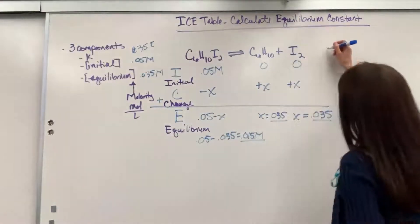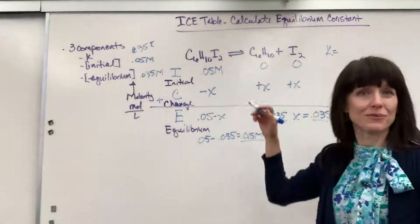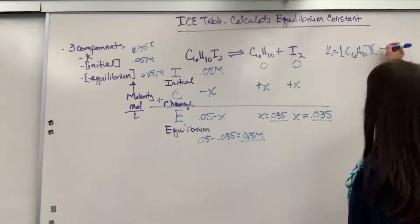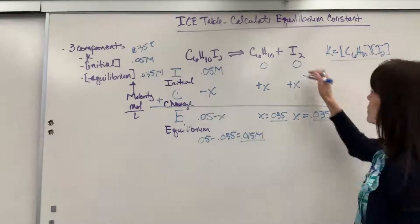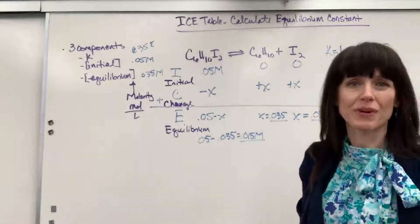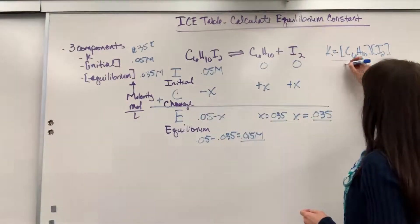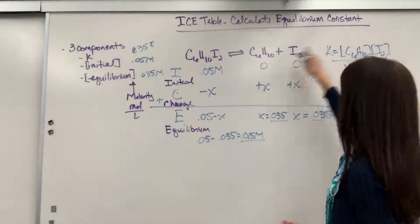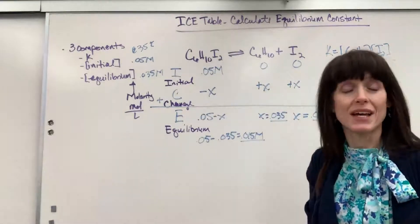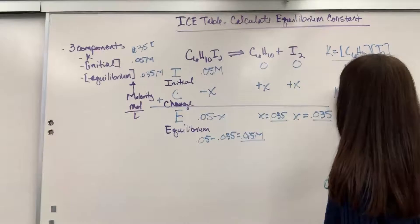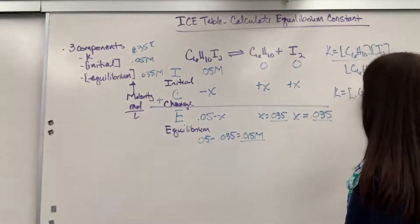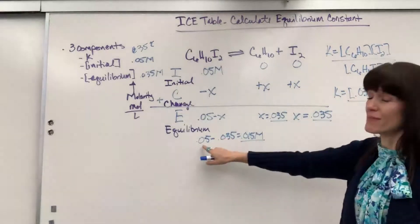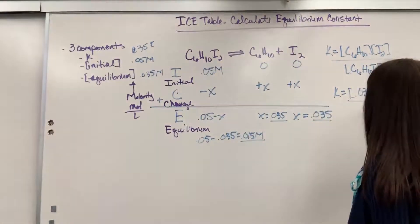So K. This is going to be products over reactants. So we'll have the concentration of the C6H10 times the concentration of I2. Remember when you have multiple reactants or products, you multiply those concentrations, divided by the C6H10I2. They all have one coefficient, so they all have understood one exponent. Now I can just plug my numbers in. So K is going to equal 0.035 times 0.035 divided by my equilibrium for the iodine. Remember that was 0.015.